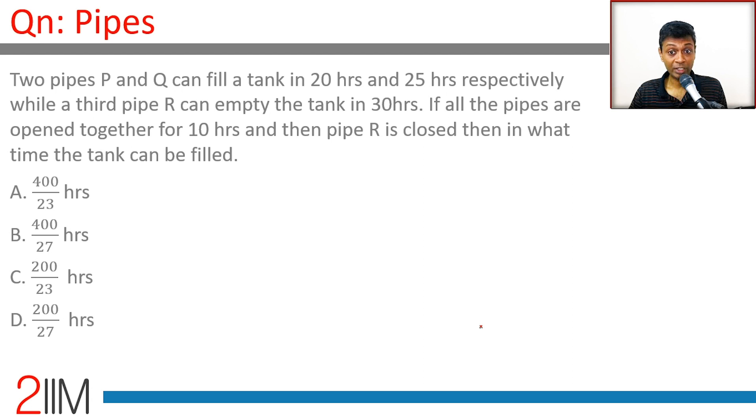Two pipes P and Q can fill a tank in 20 hours and 25 hours respectively, while a third pipe R can empty it in 30 hours. If all the pipes are open together for 10 hours, then pipe R is closed, in what time can the tank be filled?